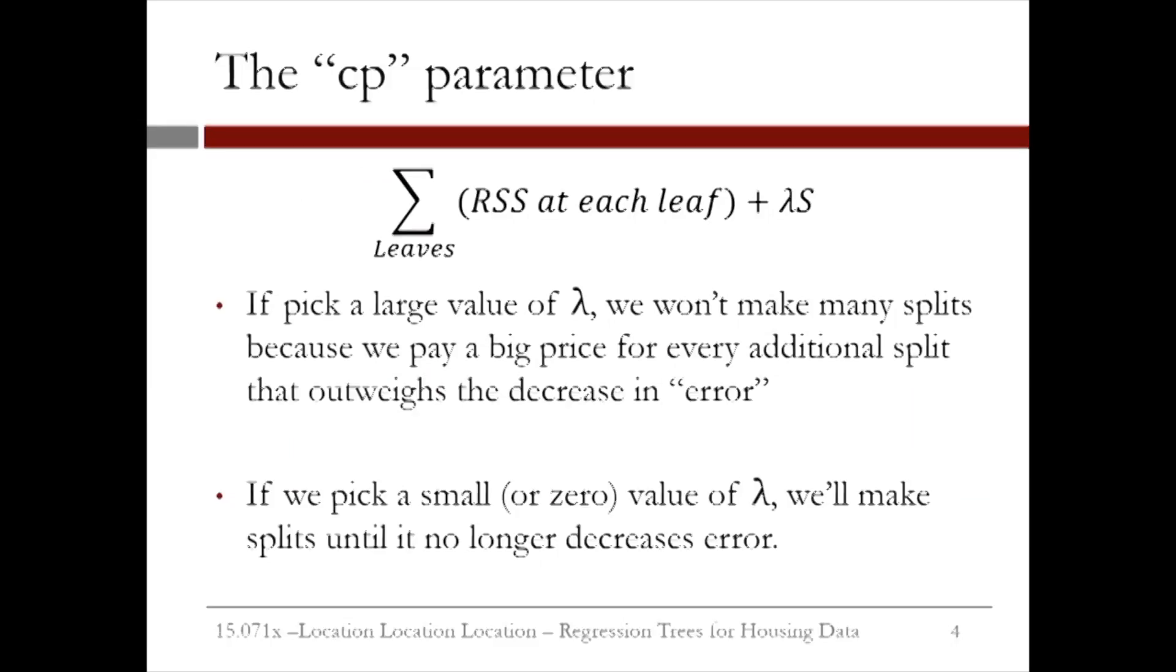Notice that if we pick a large value of lambda, we won't make many splits, because we pay a big price for every additional split that will outweigh the decrease in error. If we pick a small or zero value of lambda, we'll make splits until it no longer decreases the error.